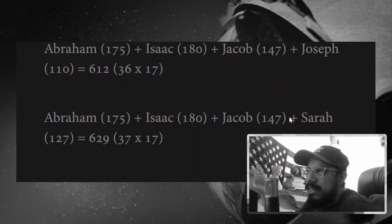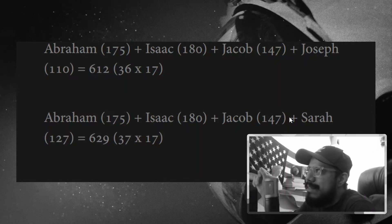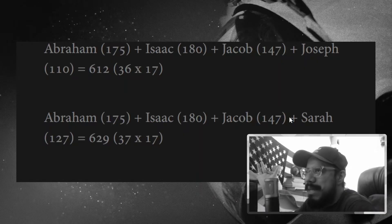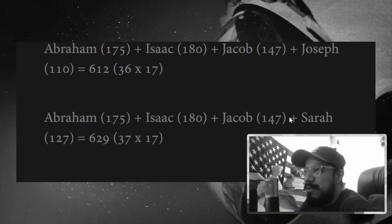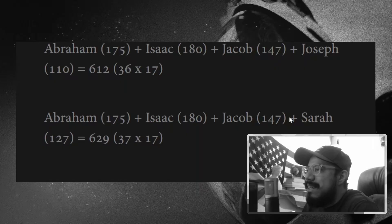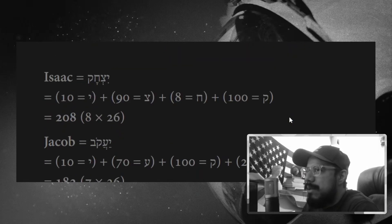Now, why Sarah? Why does she get to be inserted in? I think on one hand, it's kind of obvious that she's ultimately the matriarch, right? She's the wife of Abraham that was promised Isaac was supposed to come through that line. So on one hand, there's that. On the other hand, it could be that there's a gematria thing going on.